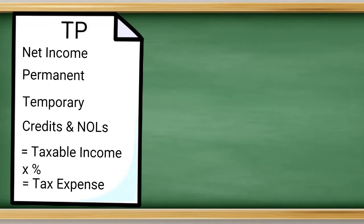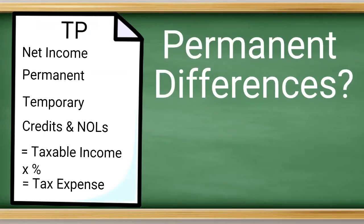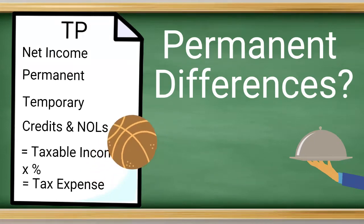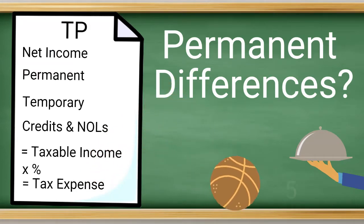Before we get to deferreds, let's take a step back and learn what some of these things are by starting with permanent differences. As the name implies, these are differences that are permanent. A good example of this in the U.S. tax code is meals and entertainment. Under the U.S. laws, you can only deduct 50% of those meals.